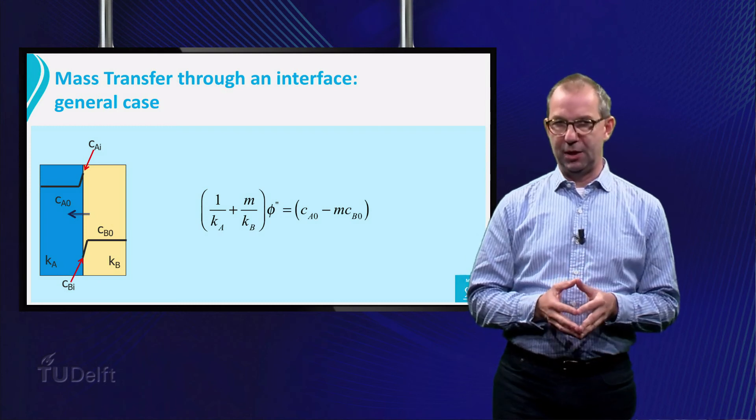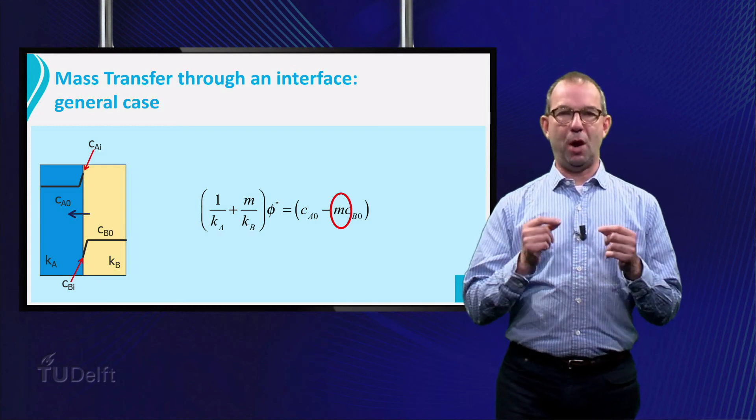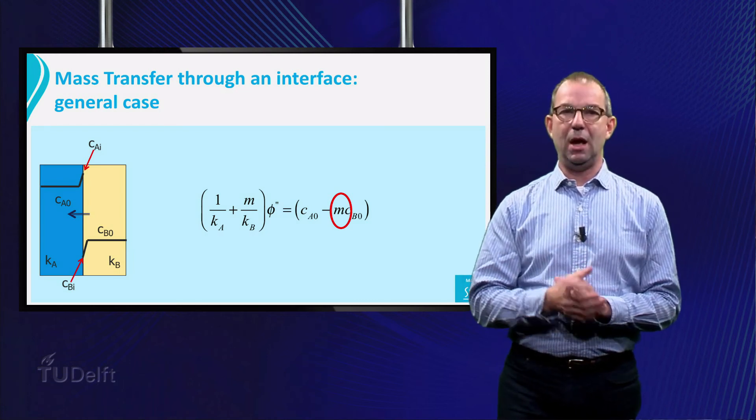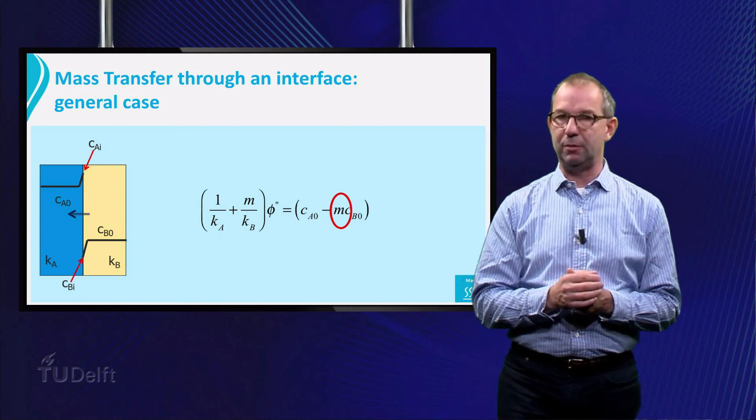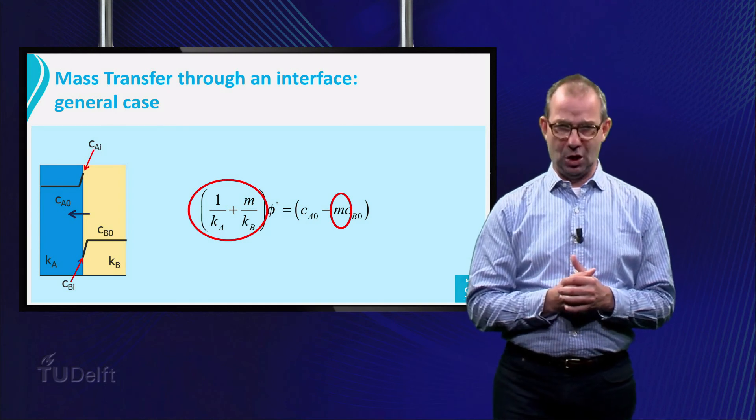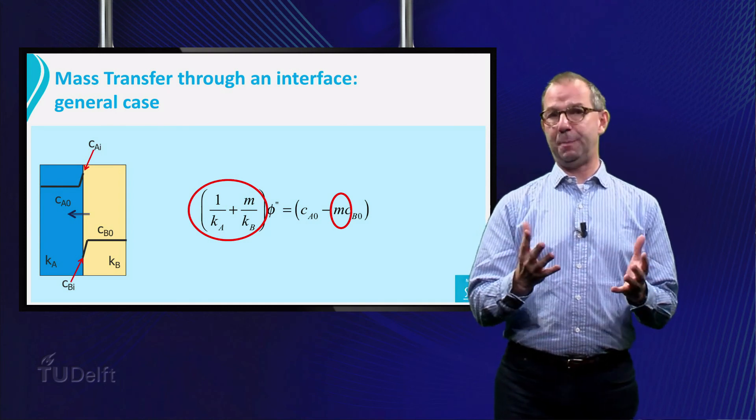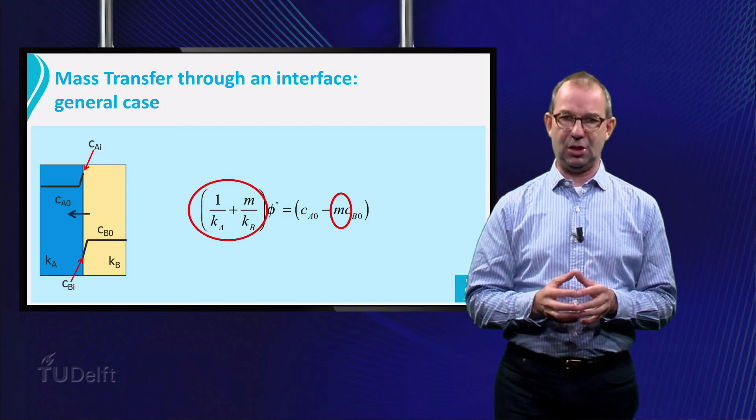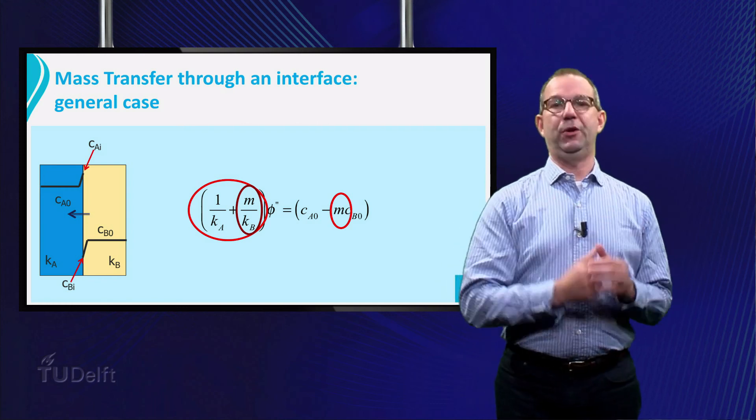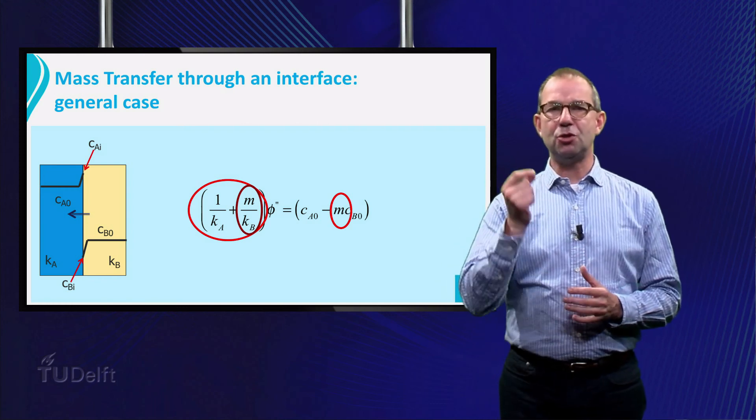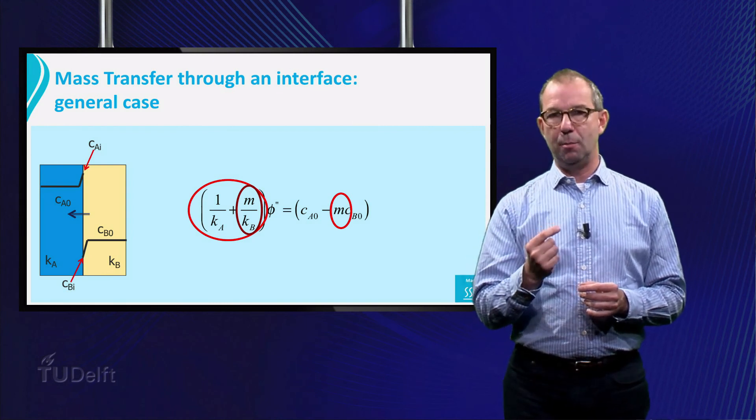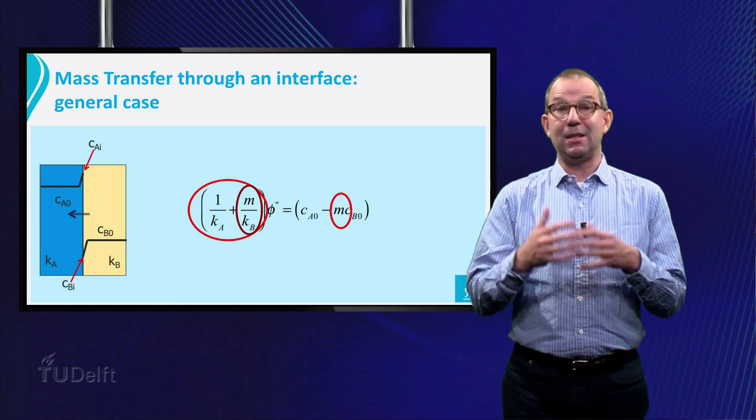Let's inspect our new equation. First, we see that the driving force is indeed the concentration difference with the partition coefficient as pre-factor for C B zero. Second, there are two resistances on the left side. That is to be expected. It's like the electrical resistances in series. But notice that also here the partition coefficient slips in. This is crucial to appreciate. The resistance is no longer 1 over K, but one of the two sides gets a factor M.